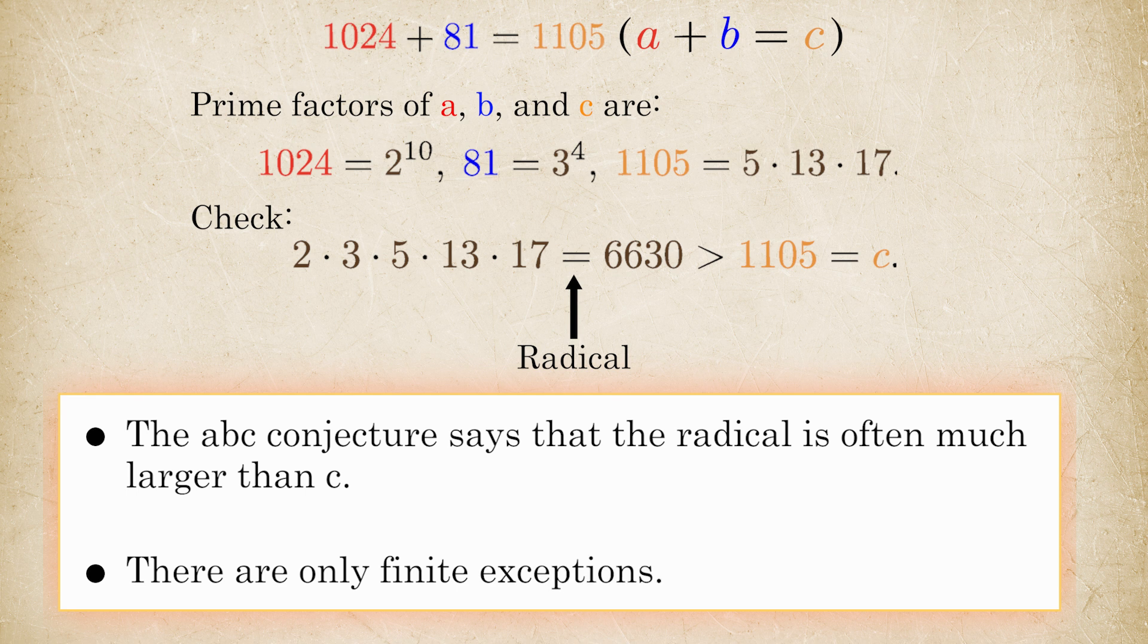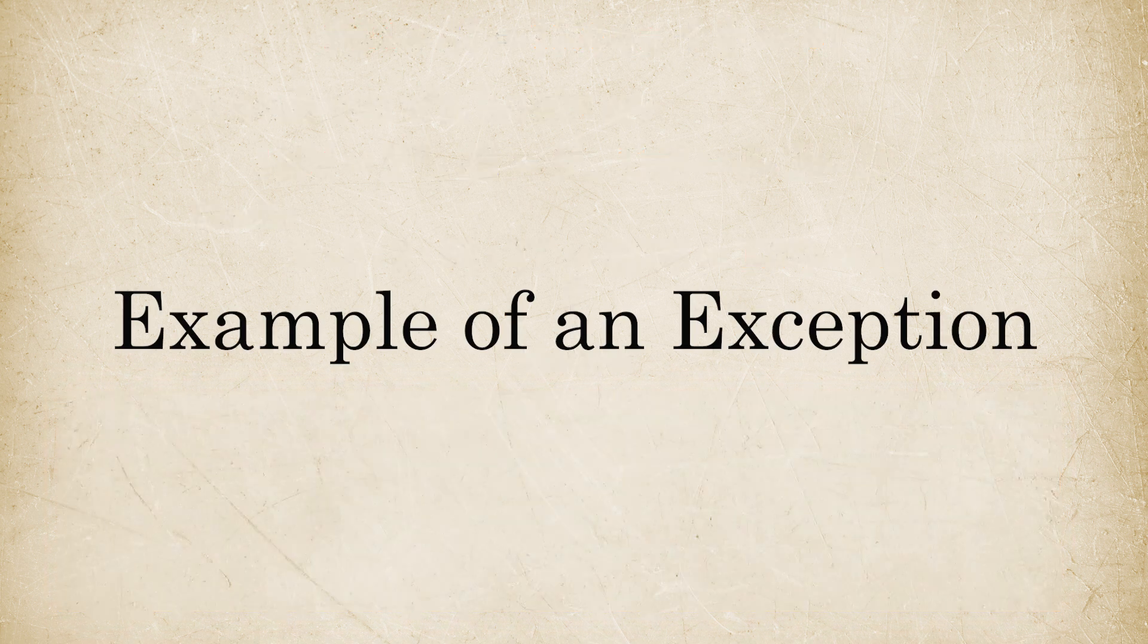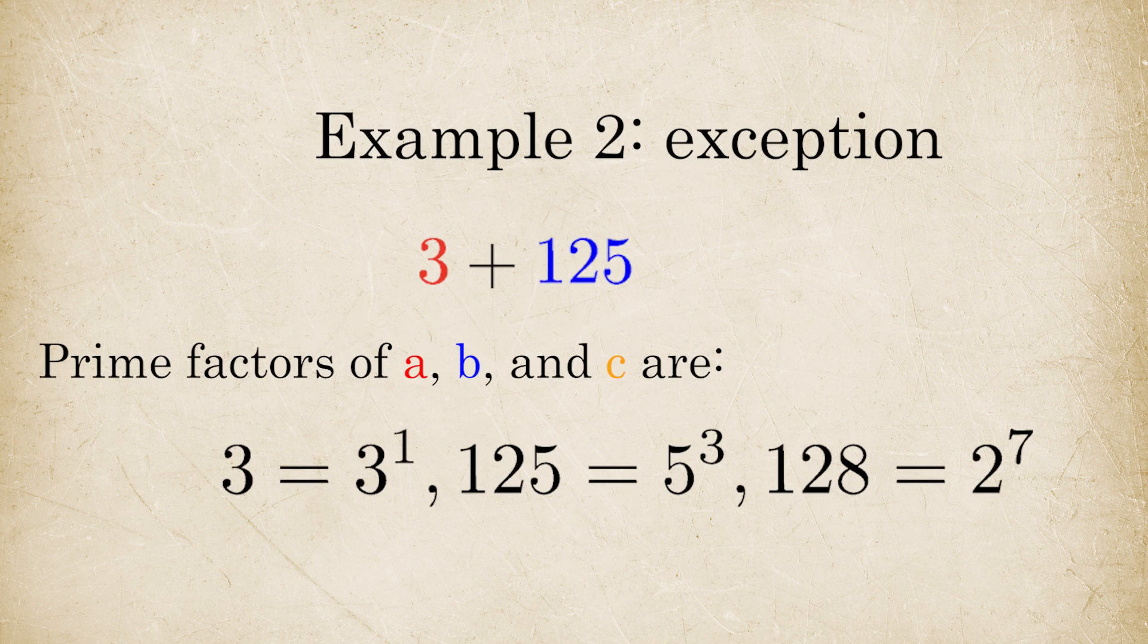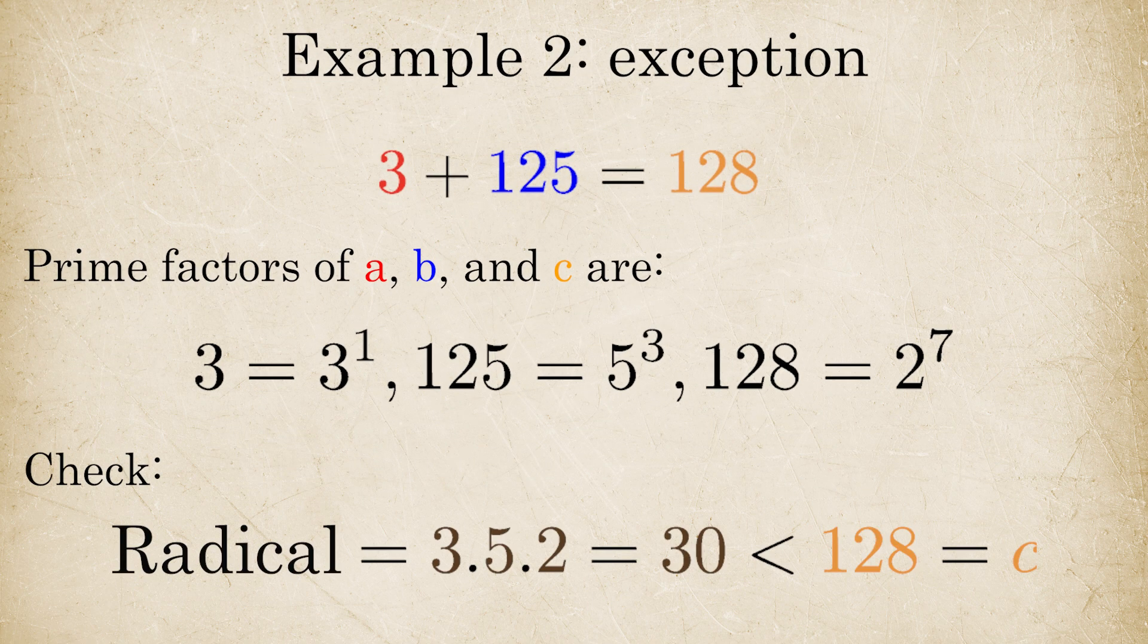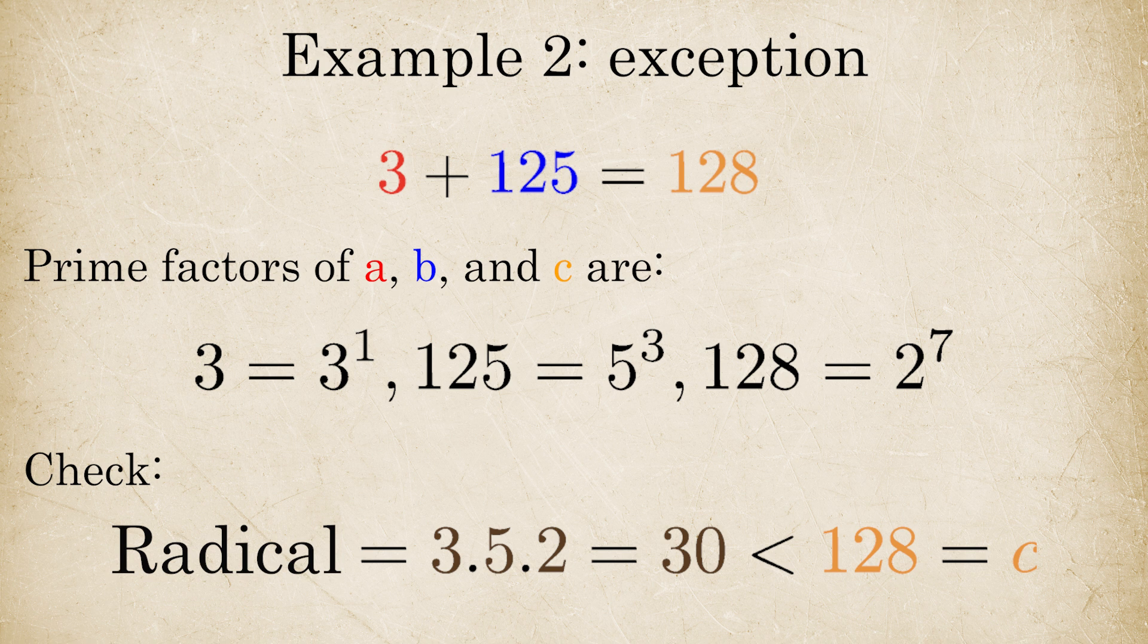There can be exceptions, and the conjecture says that such exceptions are finite. 3 plus 125 gives 128, yet the radical is only 30. That's an exception. ABC predicts only finitely many of these exist.